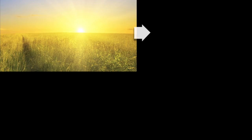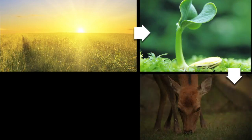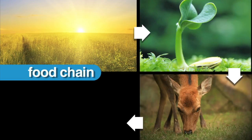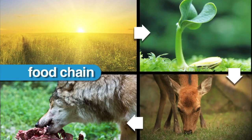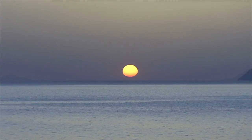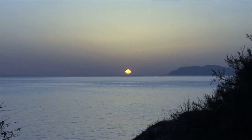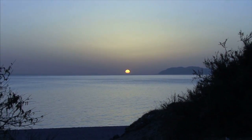To better understand how organisms get energy, we use a food chain. A food chain shows the relationship between the plants and animals in an ecosystem. All food begins with the sun. The sun provides energy for everything on our planet.